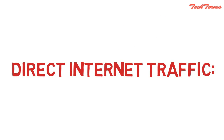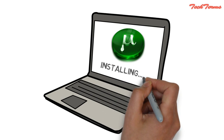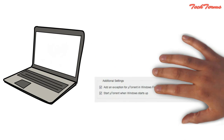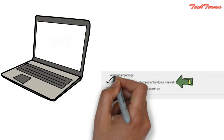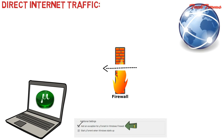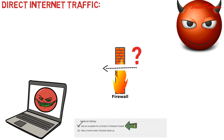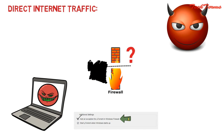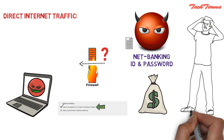The third limitation is direct internet traffic. Suppose you are installing uTorrent on your computer. During its installation, you will get a checkbox saying "add an exception for uTorrent in Windows firewall." If you check that box, then Windows firewall will allow all the data coming to uTorrent from the internet to your computer. In such a case, a hacker can send malicious data through uTorrent to your computer without being detected by the firewall. With the help of that malware, the hacker can obtain your personal data and make your bank accounts empty within seconds.